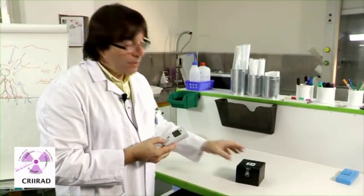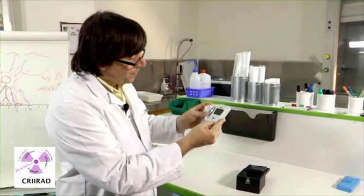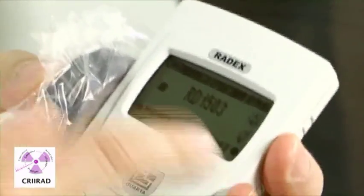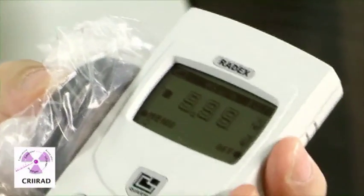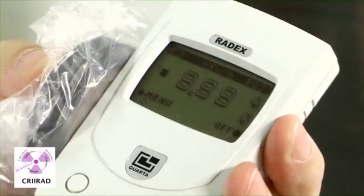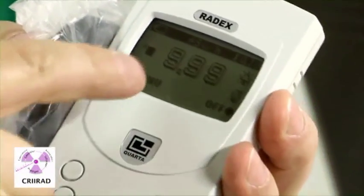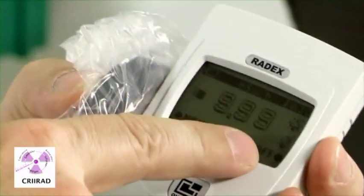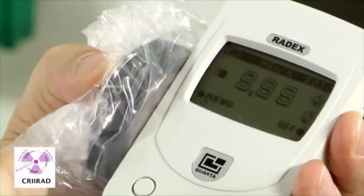Now we will measure the dose rate on this sample of contaminated soil using the Radex. So immediately, we see that the amount of gamma radiation which is emitted is quite high. We hear the sound, and we see that even after a few seconds, we have quite a huge number. It's 9.99, which is about 10, 10 microsieverts per hour.